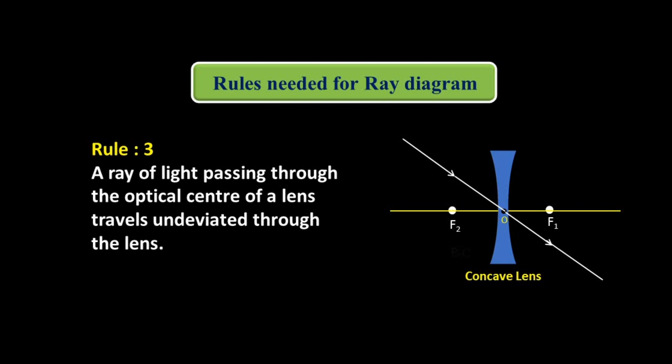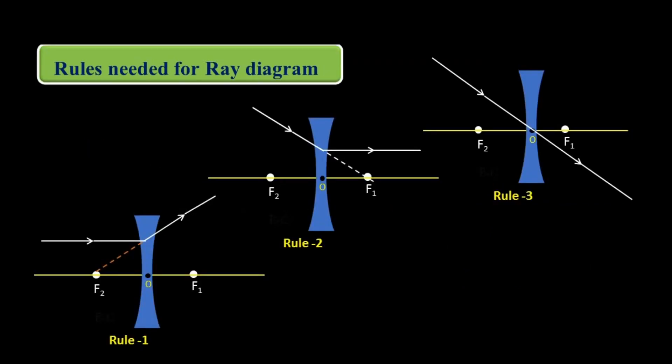Same rule as the Convex Lens. So these are the 3 rules: If the Incident Ray is parallel to the Principal Axis, after refraction it diverges and appears to be coming from Focus F2. If the Incident Ray is directed towards the Focus, after refraction it becomes parallel to the Principal Axis. When the Incident Ray passes through the optical center, it passes without any deviation. These are the 3 rules for the Construction of Ray Diagram.